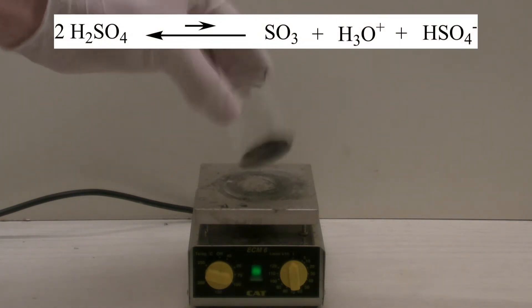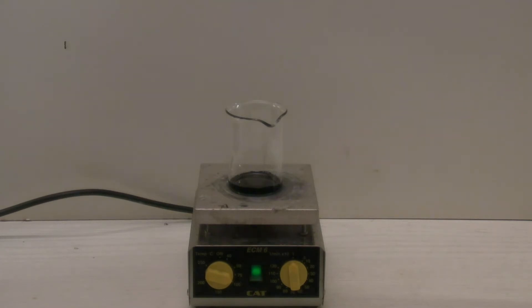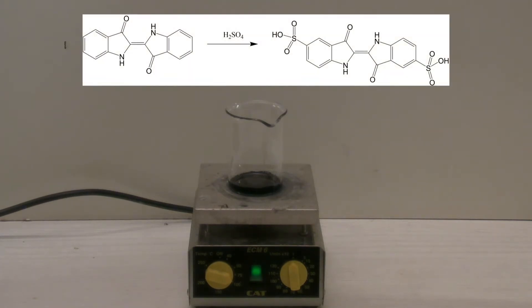Sulfuric acid is able to react with itself in an equilibrium reaction. This is called autoprotolysis, which can be used to sulfonate some substances even without sulfur trioxide, as for example indigo. Due to the sulfonation, indigo carmine should form.